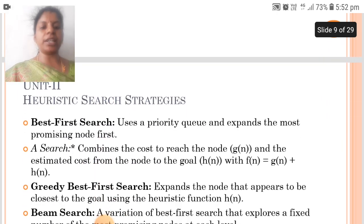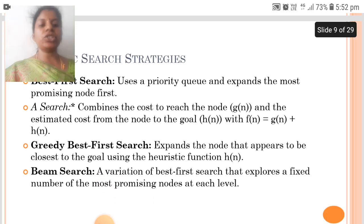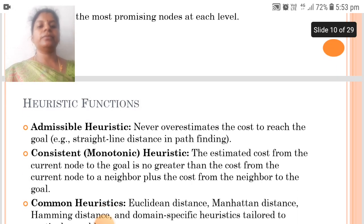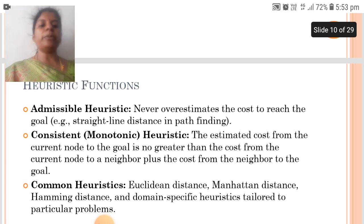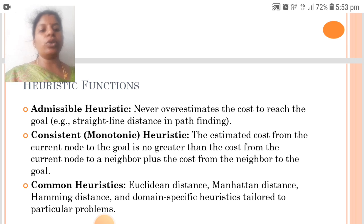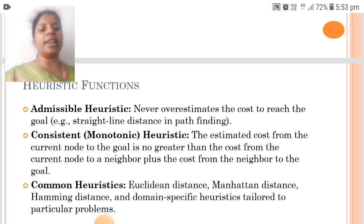The next is Unit 2, heuristic search strategies. Best first search uses a priority queue and expands the most promising node first. A* search combines the cost to reach the node and the estimated cost from the node to the goal. Greedy best first search expands the node that appears to be closest to the goal using the heuristic function. Beam search is a variation of best first search that explores a fixed number of the most promising nodes at each level. Heuristic functions include admissible heuristic, which never overestimates the cost to reach the goal; consistent heuristic, where the estimated cost from the current node to the goal is no greater than the cost to a neighbor plus the cost from the neighbor to the goal; and common heuristics such as the Hamming distance and domain-specific heuristics tailored to particular problems.